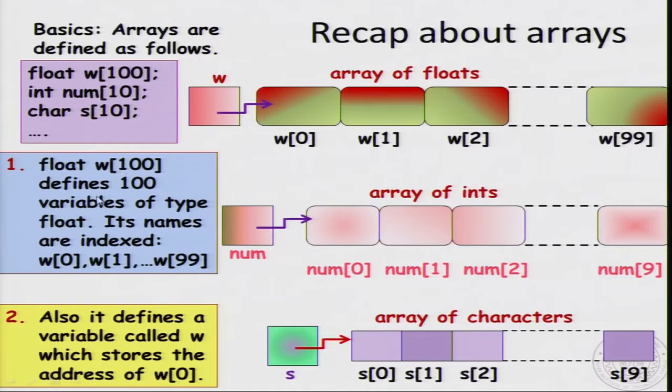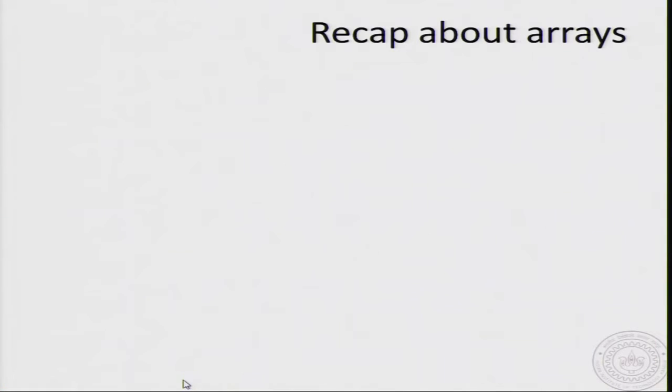The arrays names, the cells of the array or the elements of the array are indexed from w[0] through w[99]. The indices start from 0. We have also mentioned that conceptually there is a separate variable called w, the name of the array which stores the address of w[0].